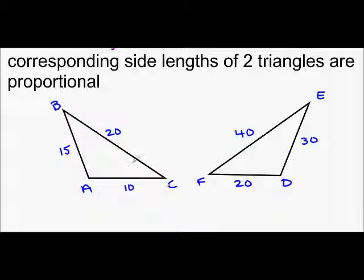You can see each of these sides are proportional. So, if I take 10 over 20, I get 1 half for my scale factor. 15 over 30 also gives me a scale factor of 1 half.